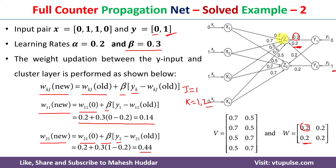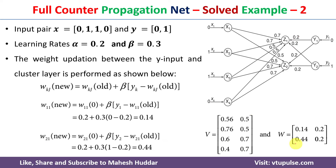So we have assigned the input pair to cluster z1, calculated the updated weights between X and z1, and calculated the updated weights between Y and z1. We now replace the old weights with the new weights in those two columns. Once replaced, these are the updated weights after the input pair is assigned to the cluster — this is how the full counter propagation net works in soft computing.